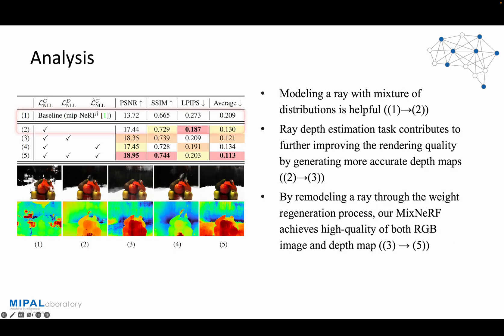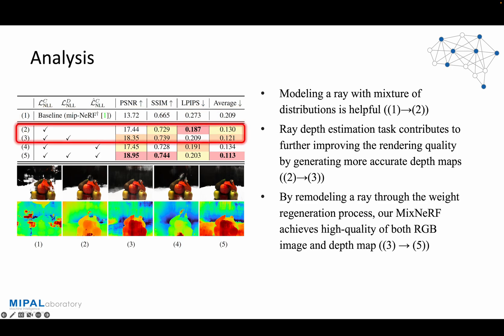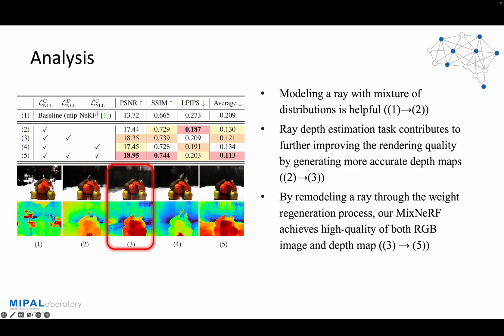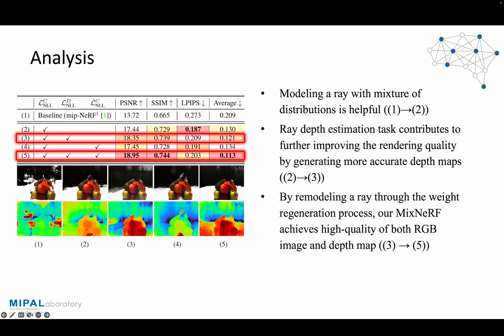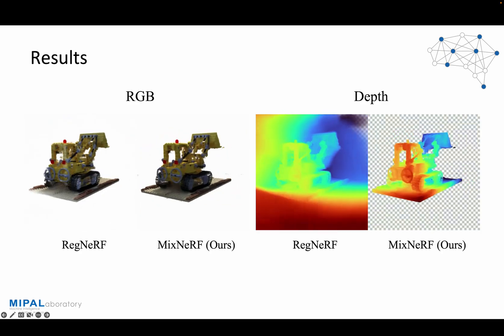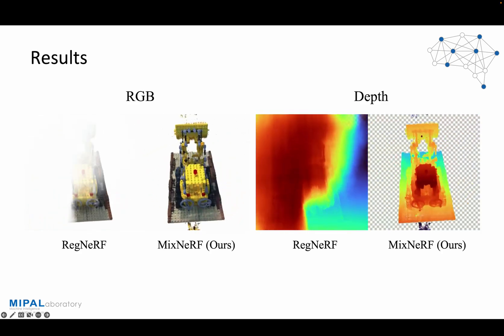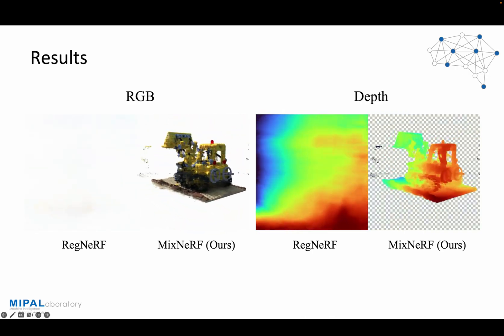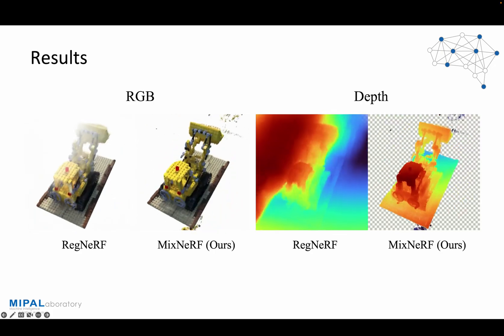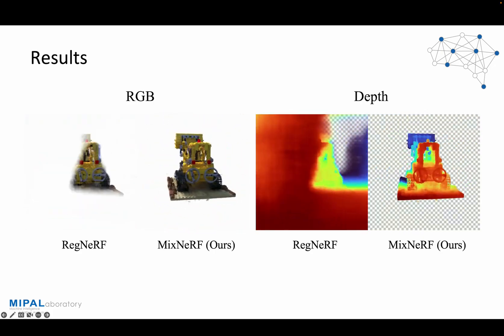Here is our ablation study. We have observed that utilizing a mixture of distributions to model a ray is beneficial for enhancing performance in scenarios with sparse views. Additionally, our introduced task of ray depth estimation significantly contributes to improving the rendering quality by generating more precise depth maps. However, even with a well-estimated depth map, the RGB image exhibits foggy artifacts around the objects. Through the weight regeneration process, our MixNeRF remodels a ray, leading to high-quality RGB images and depth maps. The depth smoothing approach employed by REGNERF leads to a notable decline in performance, suggesting that smoothing is not a universally effective solution across different datasets. On the other hand, our MixNeRF outperforms in rendering quality by exhibiting fewer artifacts and more precise geometry.